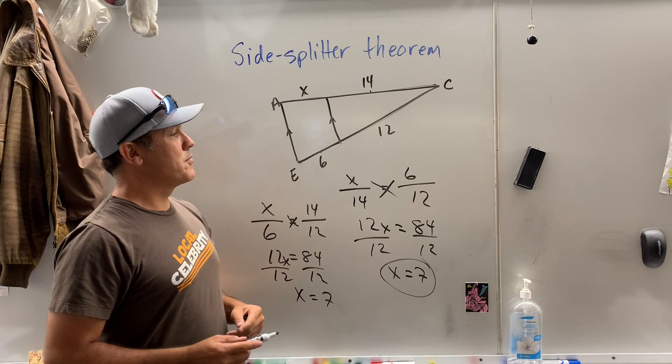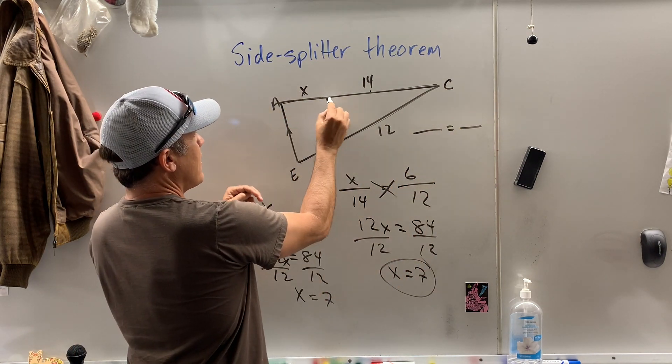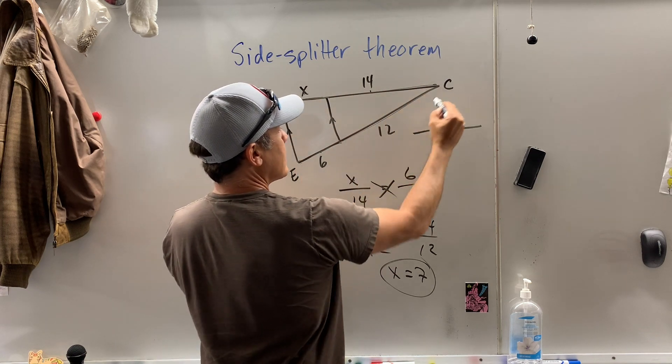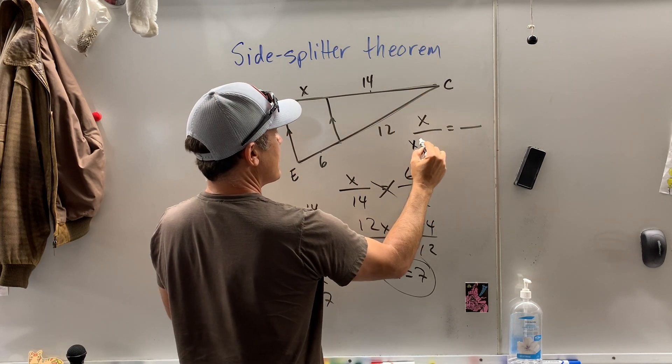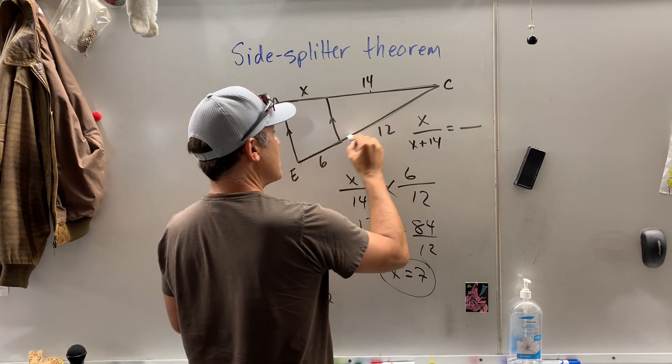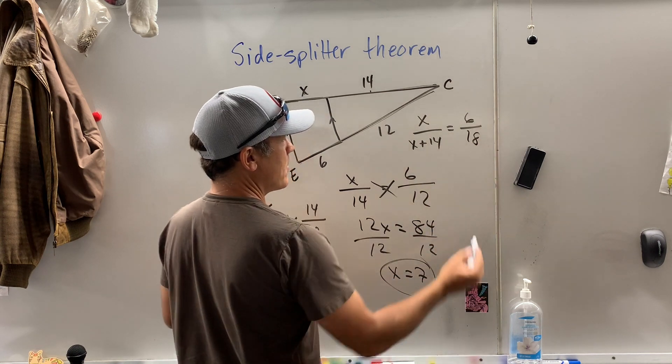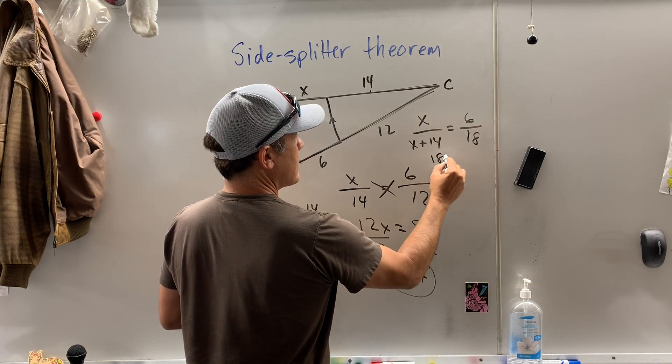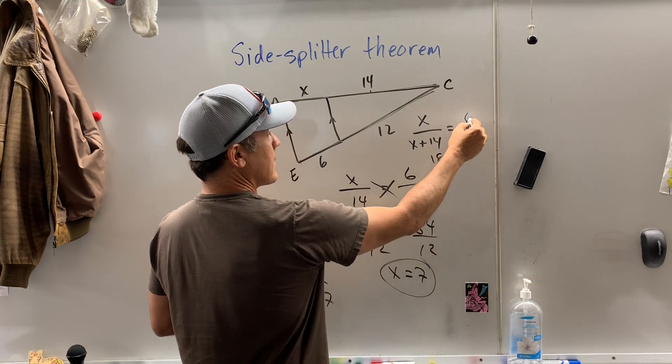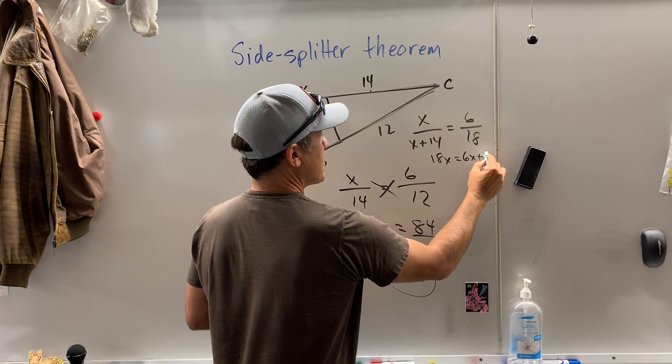There's another proportion I think we could have done. We could have said small is to big, x is to x plus 14, as small is to big, 6 is to 18. Would that work? Well, 18x equals, now you've got to take 6 times (x plus 14), which is 6x plus 84.